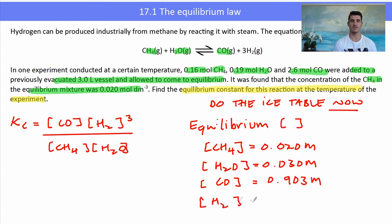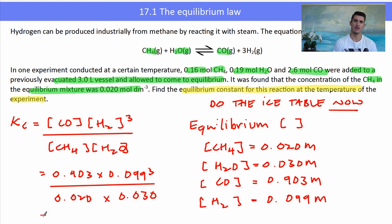Now we can substitute those numbers into our equilibrium expression to find the K value. Remember to include the squared and the cubed—don't forget those things. Type this in one step on your calculator; don't do each half individually. We can see that the K value is 1.5, and the units would be molar squared. Why? Because we have molar to the power of four on the top and molar squared down the bottom.